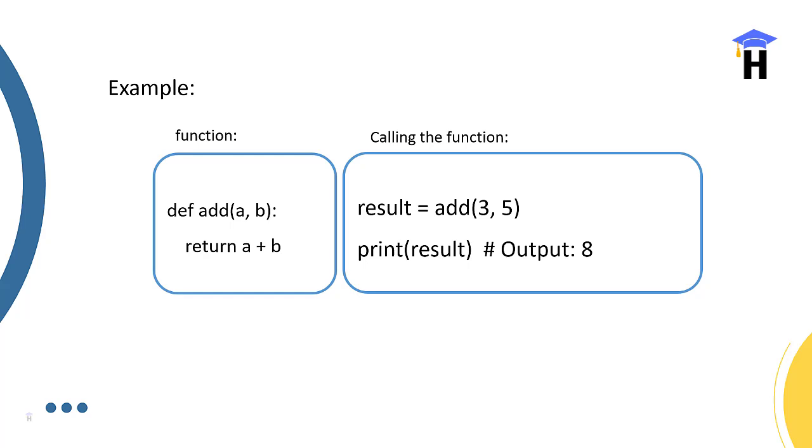Example: define add with two parameters a, b. Return a plus b. Return keyword means bounce back the data where you are calling from the function. For example, result equals add function, passing the values 3, 5. This 3, 5 is going to be calling add function which is assigning to the values a, b. a is 3, b is 5, and returning a plus b means 3 plus 5 equals 8. When we call print result, the output would be 8.